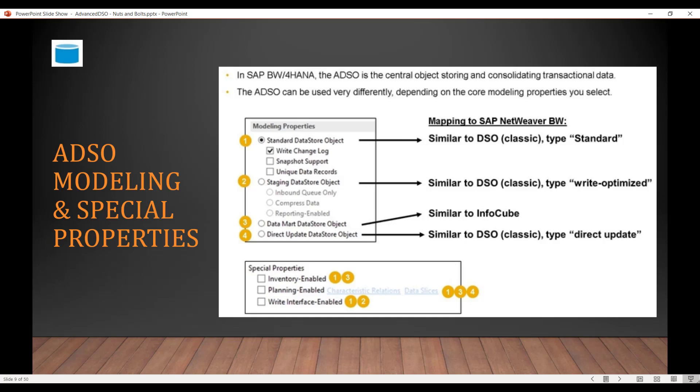The fourth type is DataMart ADSO, which is similar to the InfoCubes of the past. And then finally we have the Direct Update ADSO, which is similar to the DSO of type Direct Update of the past.